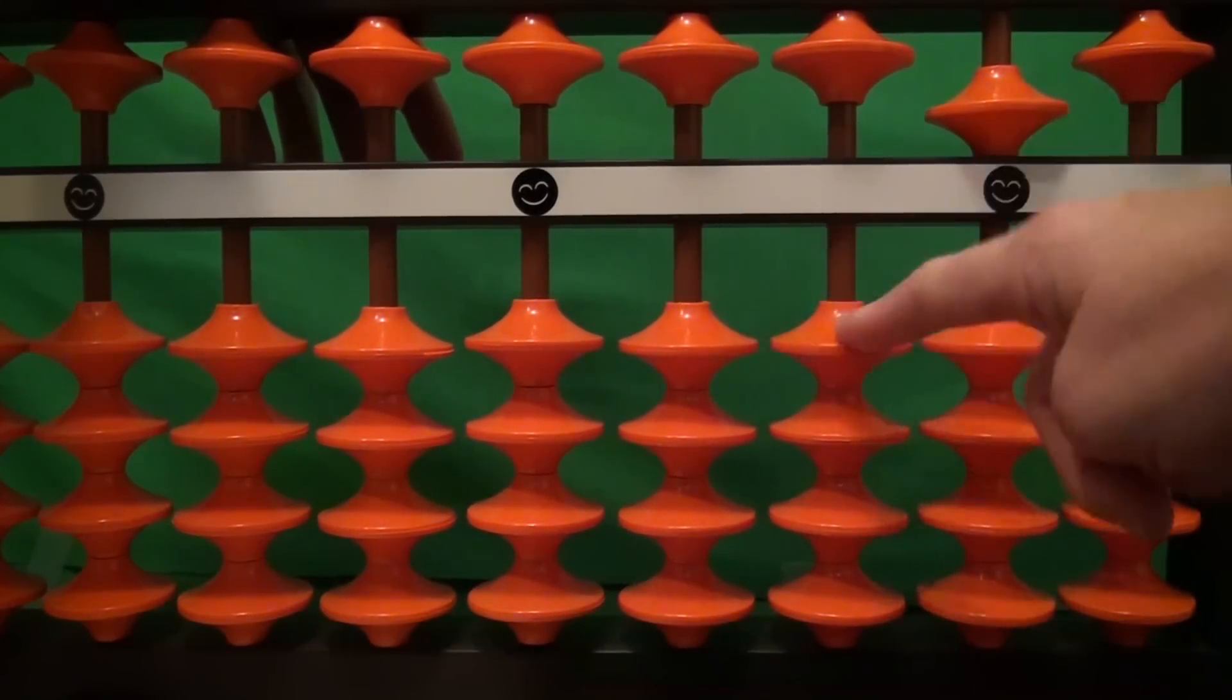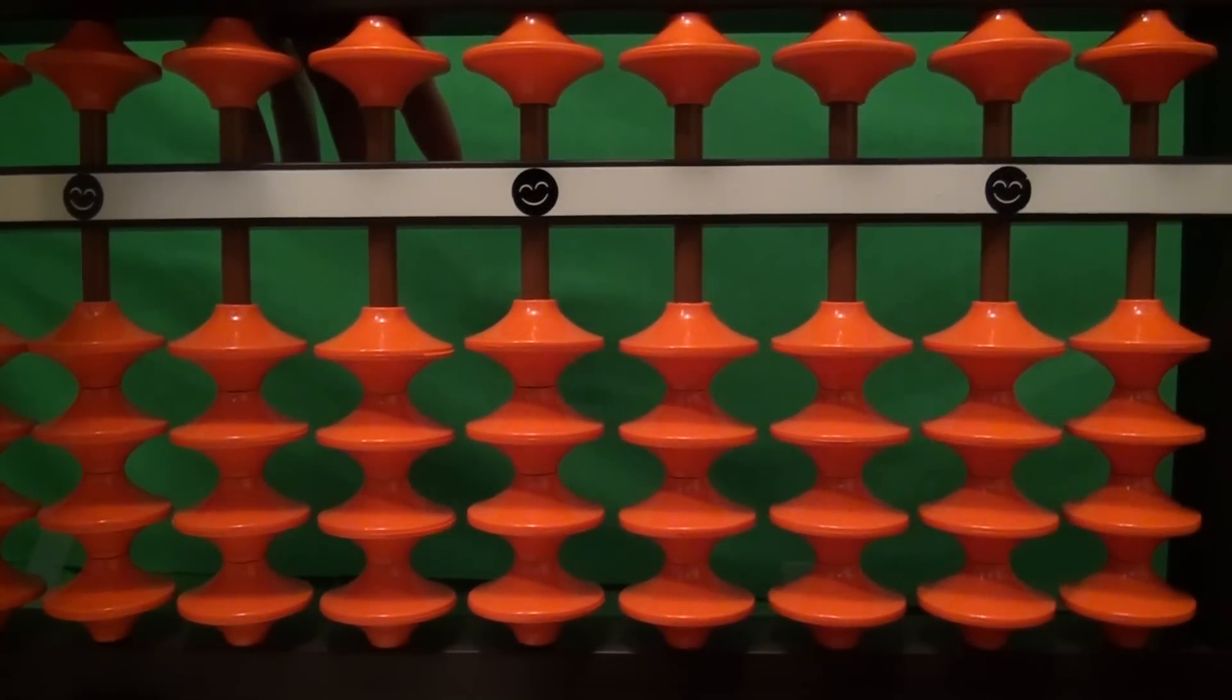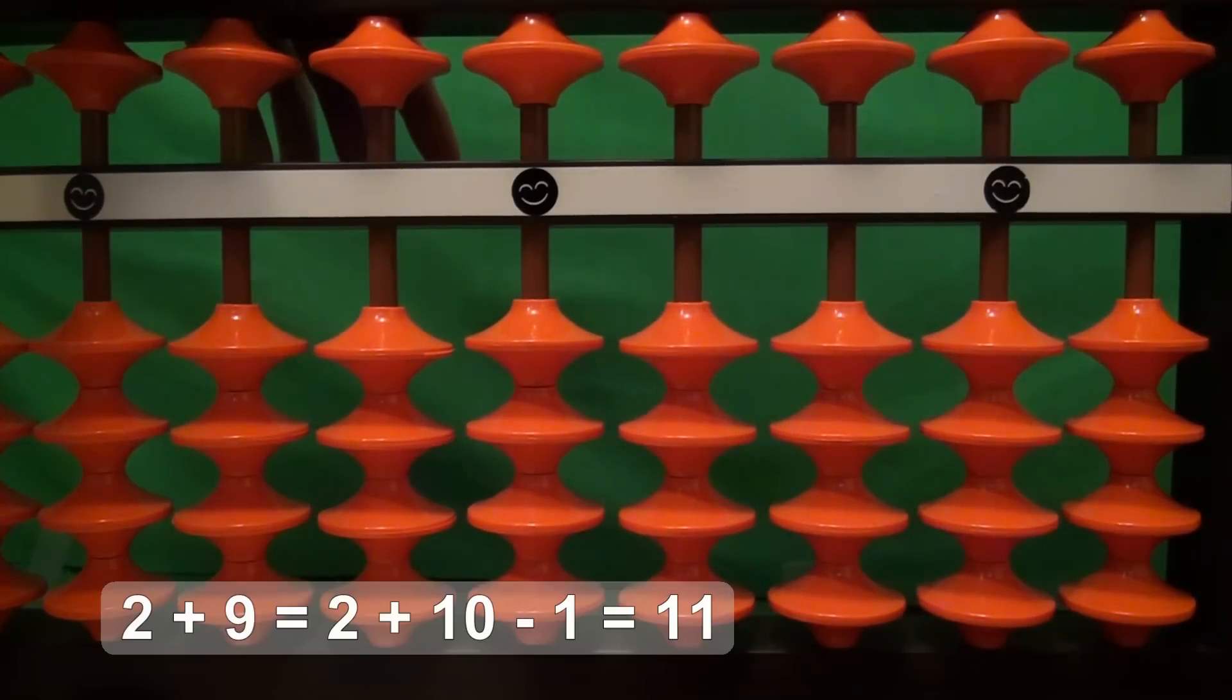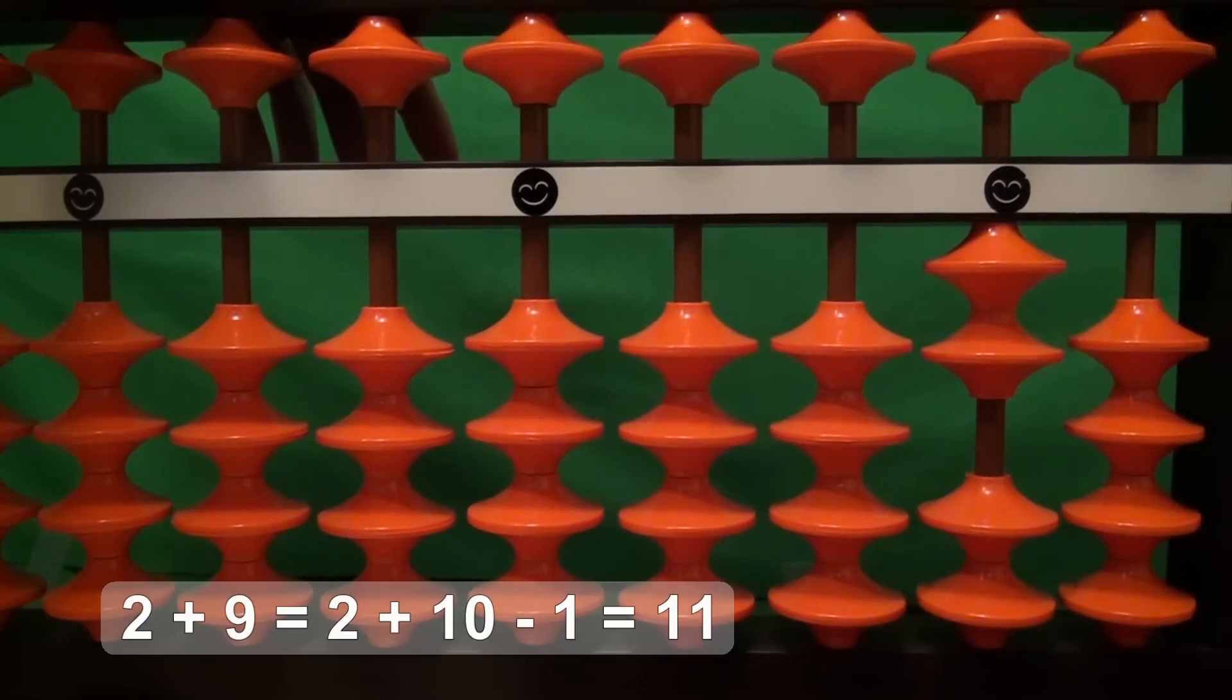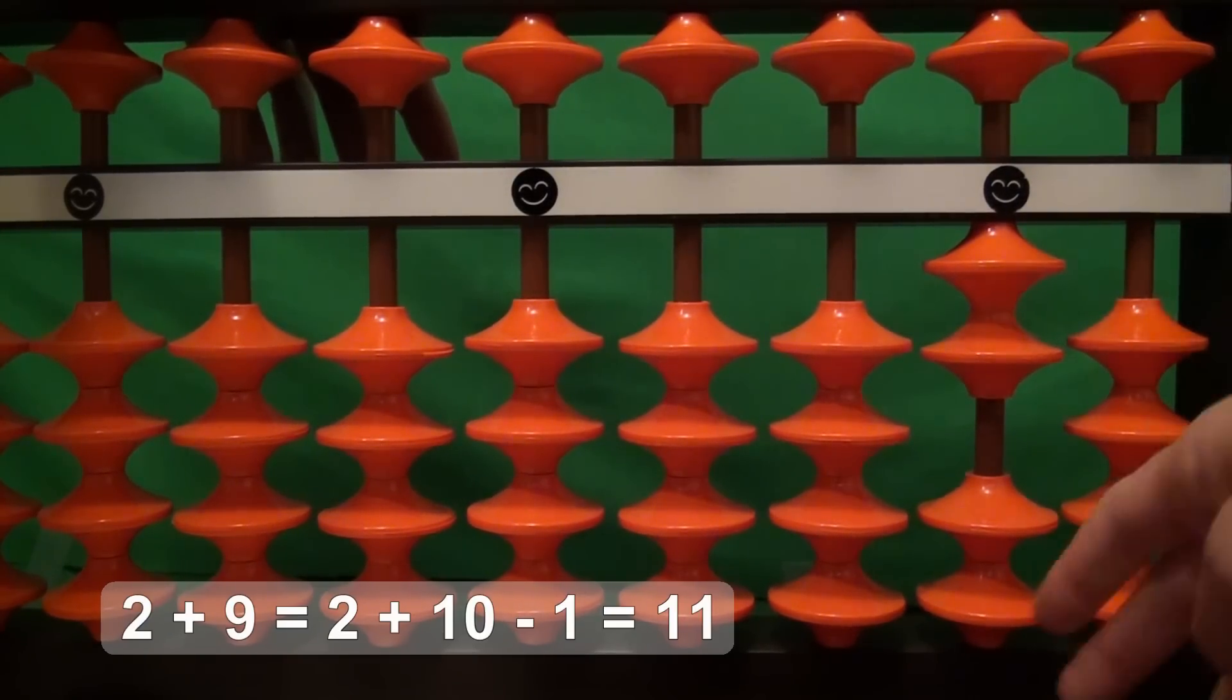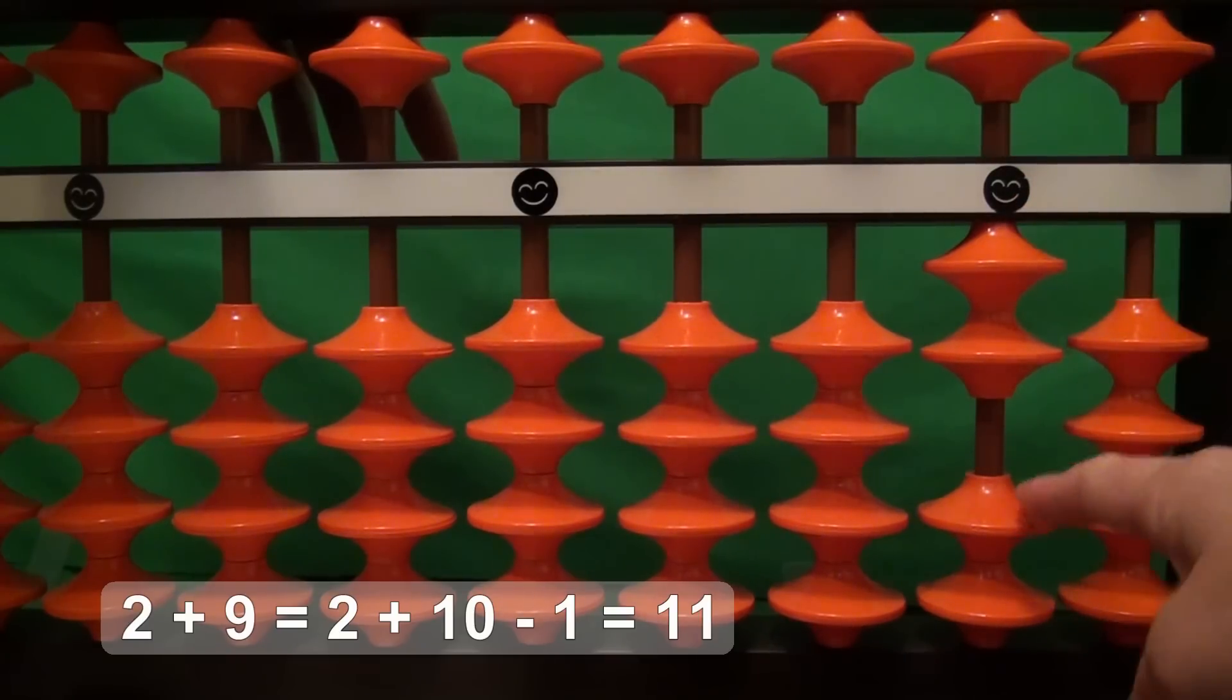OK, next problem: 2 plus 9. Here is 2. We want to add 9. 9 is 5 and 4. We have a 5 available, but we don't have 4 beads.